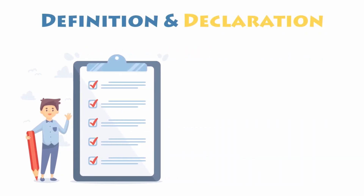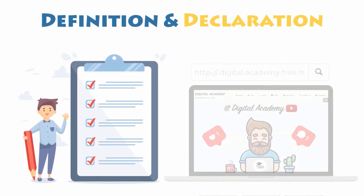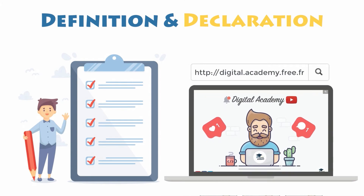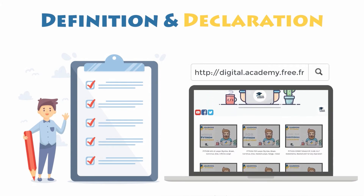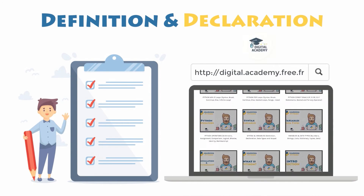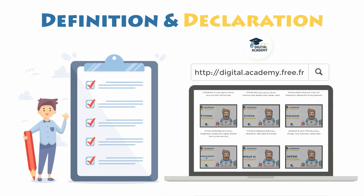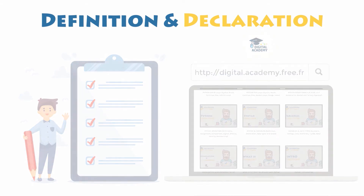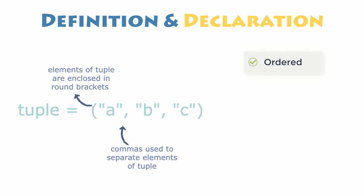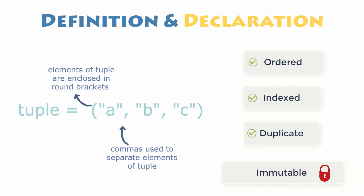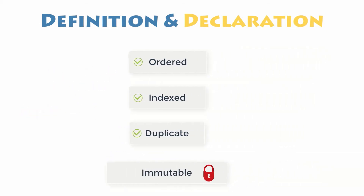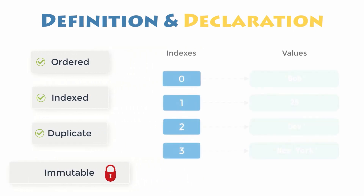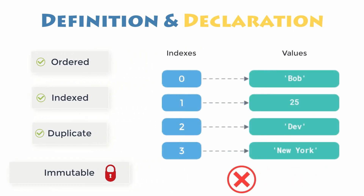Python provides another kind of data type called a tuple. Tuples are a lot like lists in Python and are used to collect objects in order. Consequently, everything you have learned about lists is true for tuples as well. A tuple in Python is an ordered collection of values, accessed by index, and can contain any sort of objects like numbers, strings, lists, or even other nested tuples.